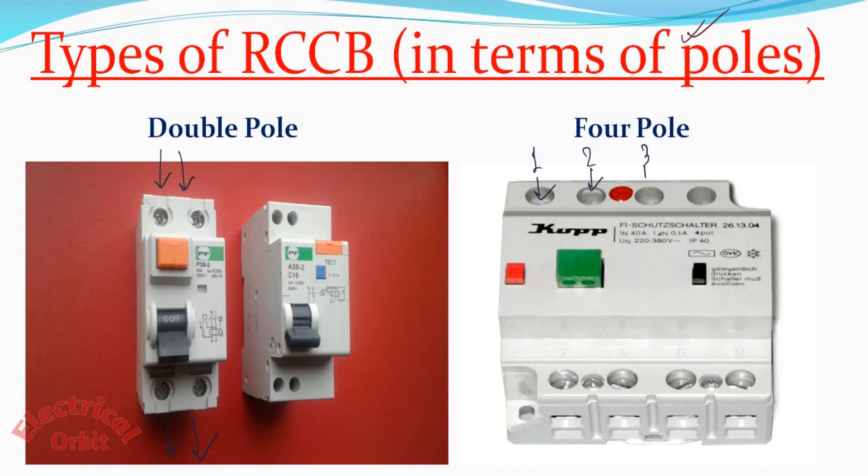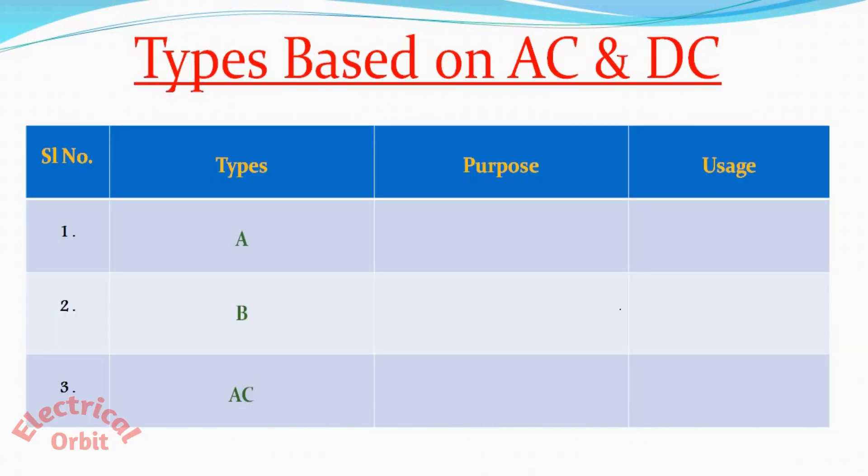And in case of four poles, see there is four number of poles: one, two, three, and four. So this double pole is used for single phase connection and this four pole is used for three phase connection. Here the same thing is there also. You are having push button and tripping, everything is same, just used for different phases.